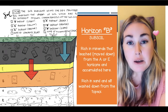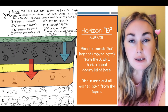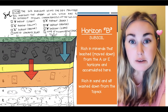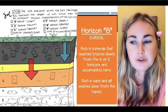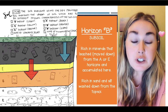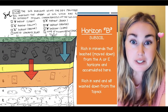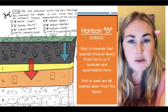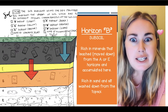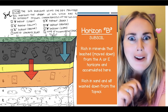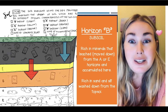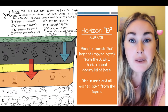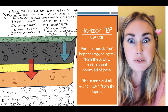Moving downward, we find Horizon B, which we call the subsoil. You can color this one orange. The subsoil is full of minerals that have been leached down. You can see that the zone of accumulation is pointing right here, which means it's accumulating all of those minerals that have been pulled down by the water through the soil.